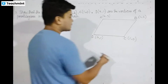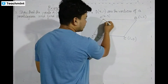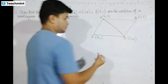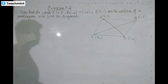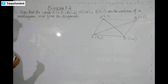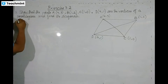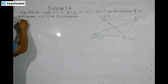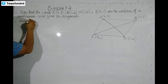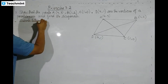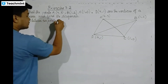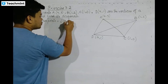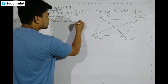Each side is equal to one another. We check that diagonals AC and BD are equal. The distance between two points is needed. Distance between two points is calculated using the formula: root over (x2 minus x1) whole square plus (y2 minus y1) whole square.